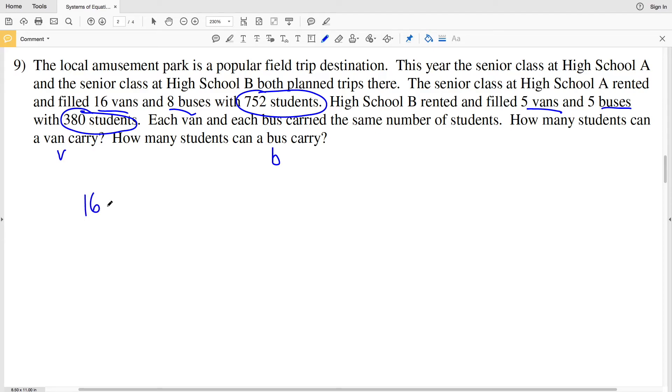So for High School A, they had 16 vans, so 16 times V is how many students fit in those vans, plus the high school also took 8 buses, so that would be 8 times B for the number of students that were in those 8 buses. That totals to be 752 students. Now, High School B totaled 380 students, and that was by using 5 vans and 5 buses. So I'm going to be solving this by using substitution. And I'll use substitution because both 5V and 5B are divisible by 5, and so is 380. So that equation I can write as V plus B equal to 380 divided by 5, which is 76. So in order to find V, I can subtract B from both sides, or in order to find B, I can subtract V. Let's go ahead and solve for V. So by subtracting B from both sides, I'll get that V is equal to 76 minus B.